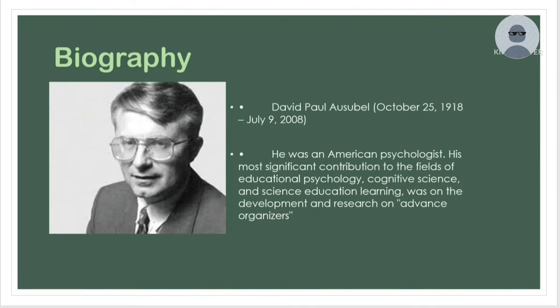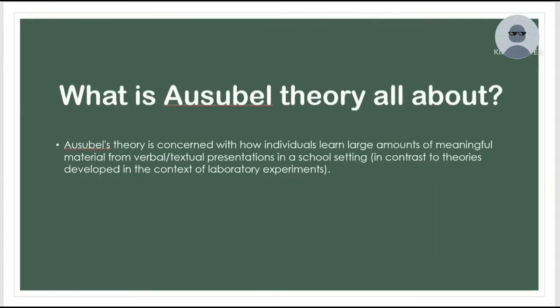It applies to the cognitive concept of learning, where a person interacts with his or her surroundings and tries to give meaning to what he or she perceives. Before I proceed to the main topic, we should know what Ausubel's theory is all about. Ausubel's theory is concerned with how individuals learn large amounts of meaningful material from verbal or textual presentations in a school setting, in contrast to theories developed in the context of laboratory experiments.